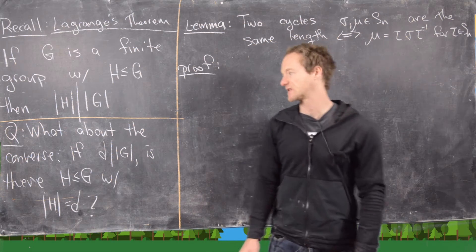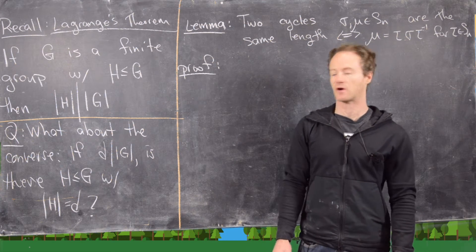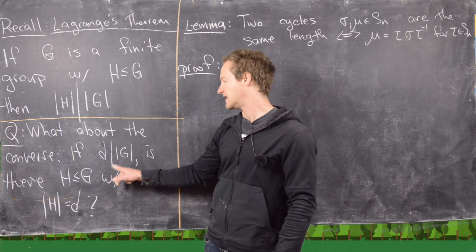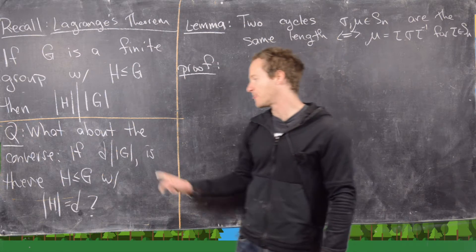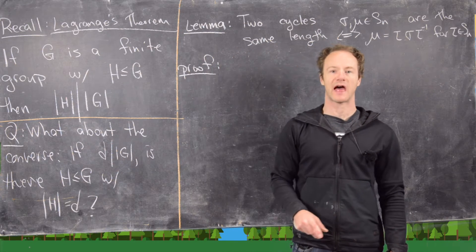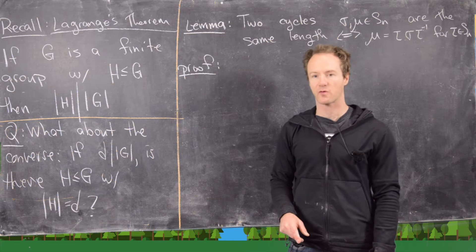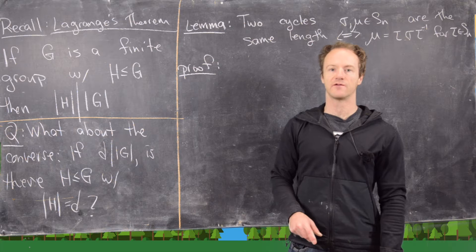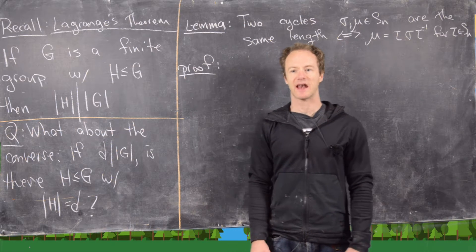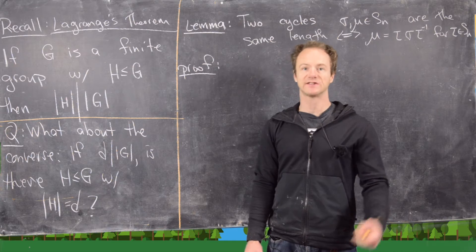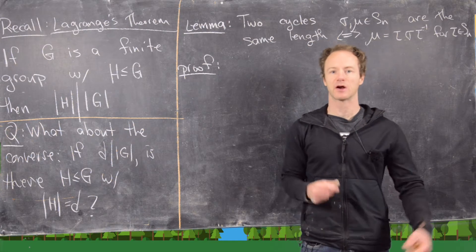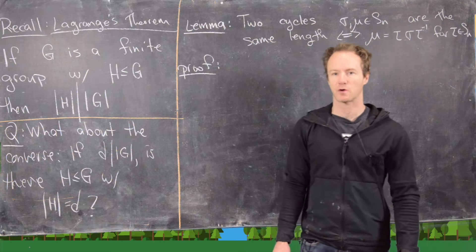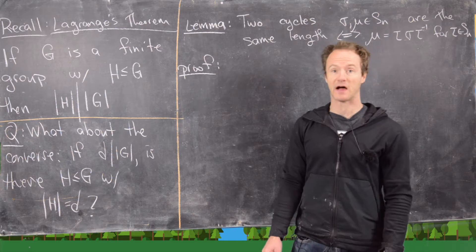An obvious question to ask is: what about the converse of Lagrange's Theorem? In other words, if we have a number D that divides the order of the group, can we find a subgroup with that order? Can we find a subgroup for every divisor of the order of a group? As we'll see, the answer is no. But which divisors do have subgroups? That's a bigger question we won't get to in this video, as it requires a lot of sophisticated algebra.